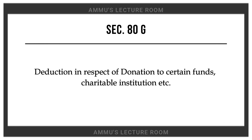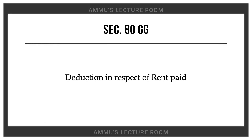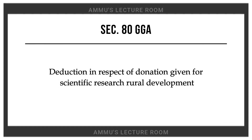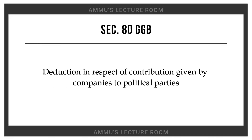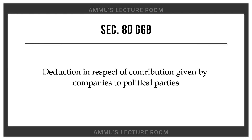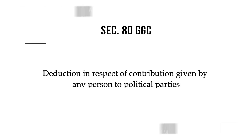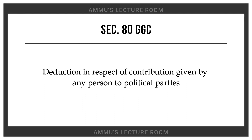Section 80G: deduction in respect of donation to certain funds and charitable institutions. Section 80GG: deduction in respect of rent paid. Section 80GGA: deduction in respect of donation given for scientific research and rural development. Section 80GGB: deduction in respect of contribution given by companies to political parties. Section 80GGC: deduction in respect of contribution given by any person to political parties.